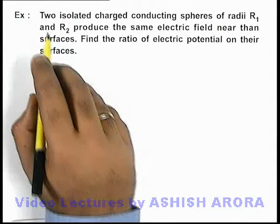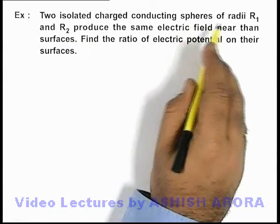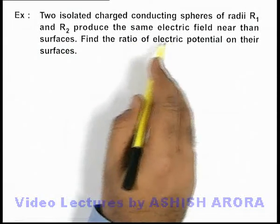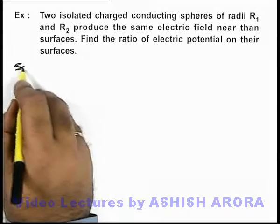In this example we are given that two isolated charged conducting spheres of radii R1 and R2 produce the same electric field near the surfaces. So we are required to find the ratio of electric potential on the surfaces.